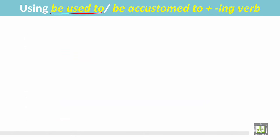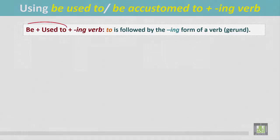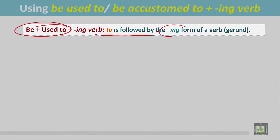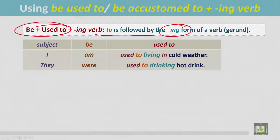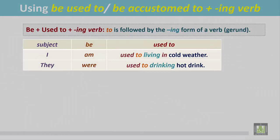Using 'be used to' or 'be accustomed to' plus an ING verb. 'Be used to' is followed by the ING form of a verb. See the examples: 'I am used to living in cold weather' — the cold weather is normal to me. 'They were used to drinking hot drink' — here 'used to' is followed by the ING form of the verb.